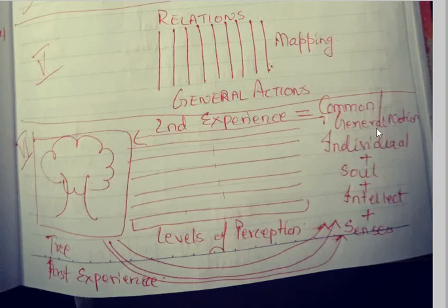The individual has a soul, intellect, and senses together, and that is why these different levels you are able to see completely will make up together as the general notion. Different levels of perception - we go from first, second, third, fourth, fifth level, and this might be called the sixth level of perception also.